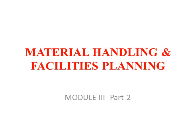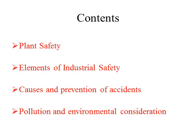Dear students, we are continuing our discussion on module 3. In the first part we discussed about industrial safety and different dimensions of industrial safety. Module 3 has four parts. The first part deals with industrial safety and its elements. In this session we are dealing with accidents. The last part will deal with pollution. So this video lecture is aimed at accidents.